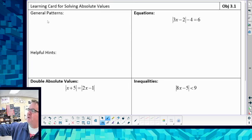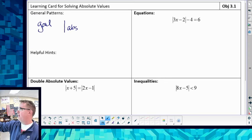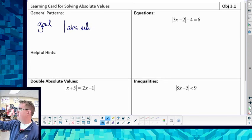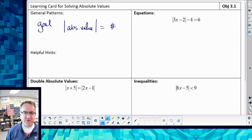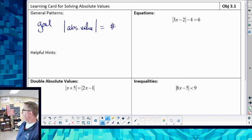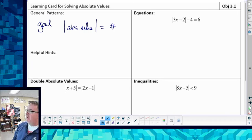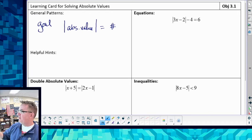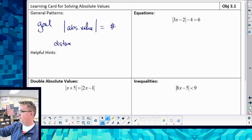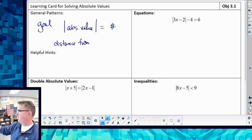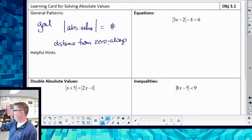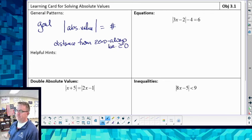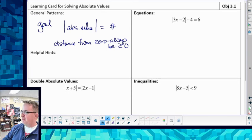So for general patterns, remember your goal on these is to get your absolute value by itself. You want your absolute value equal to a number. Now when I say equal to, it's going to hold true for inequalities as well, but you want to isolate that by itself. Because what's going to end up happening, we're talking about distance from zero, right? That's going to always be greater than or equal to zero.